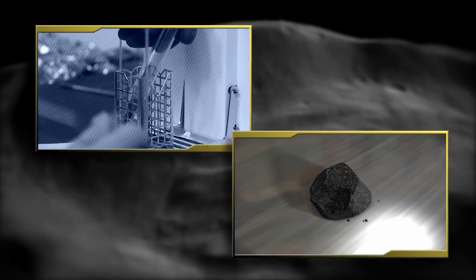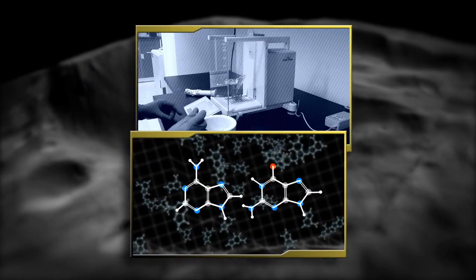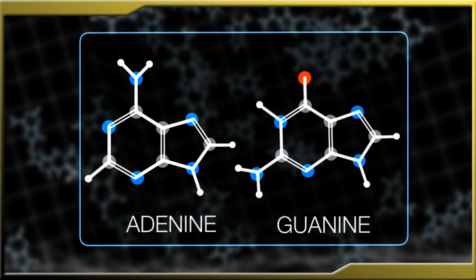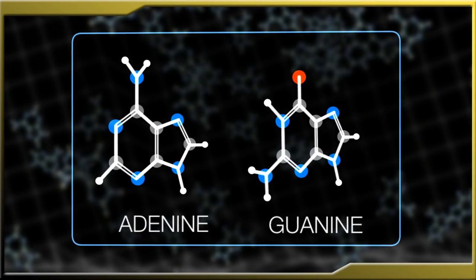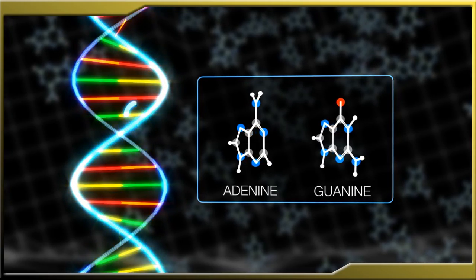Since Bennu may be rich in organic material or water left over from the formation of the solar system, sampling it could reveal whether the building blocks of life were present at that time, perhaps providing clues to the origins of life itself.